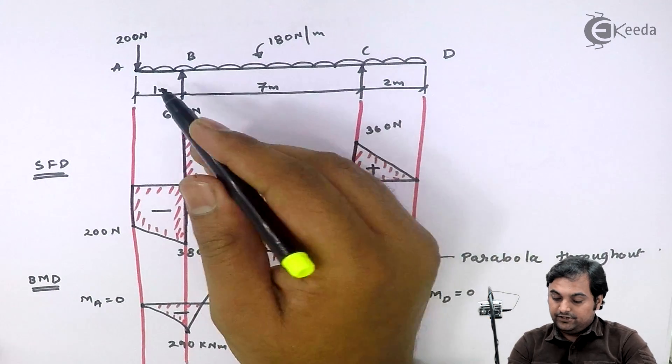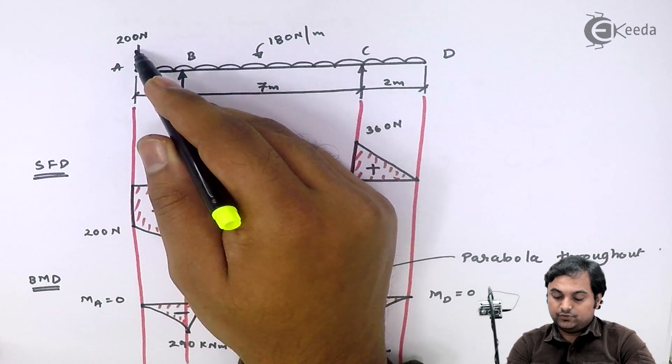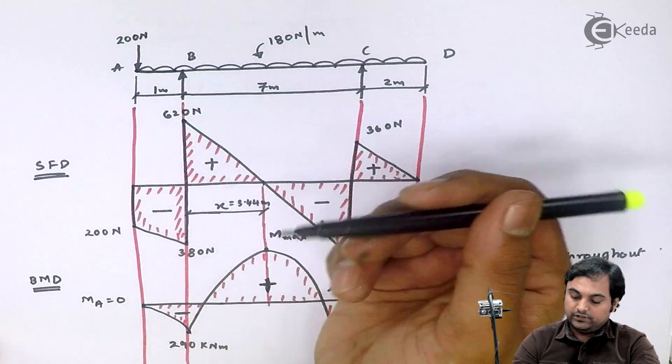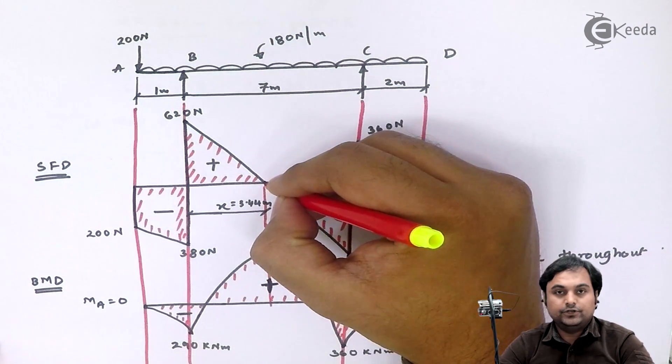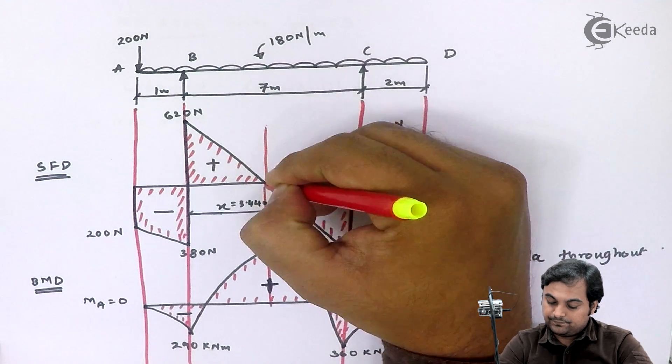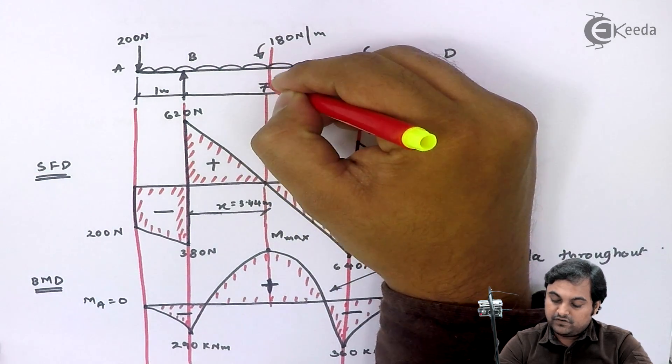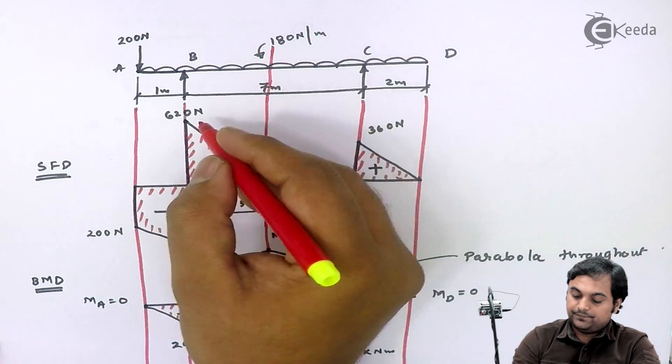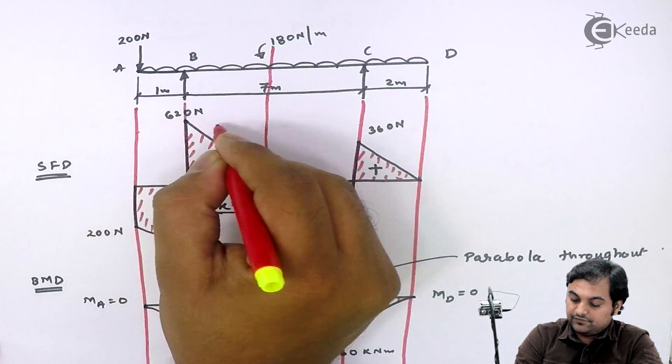Here if I see, it is 200 Newton. Now what I will do is first of all project this point of zero shear force into the diagram of the beam. Now I have projected this point and it is at a distance of.